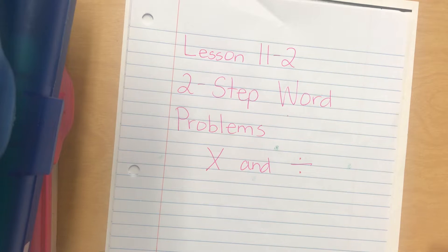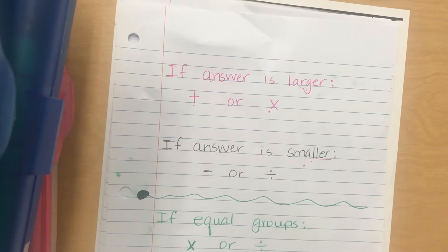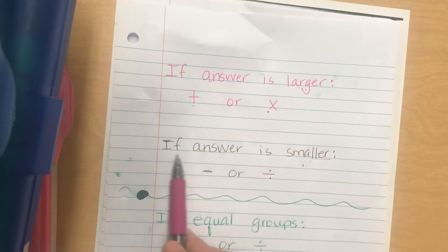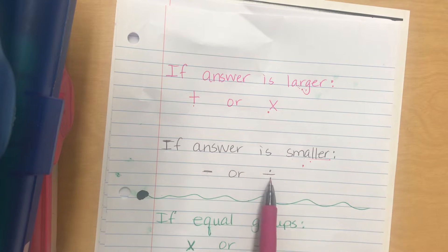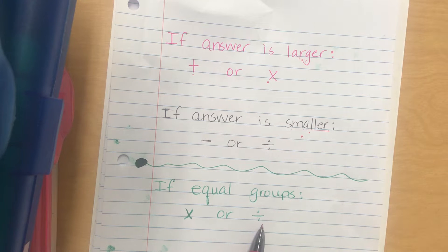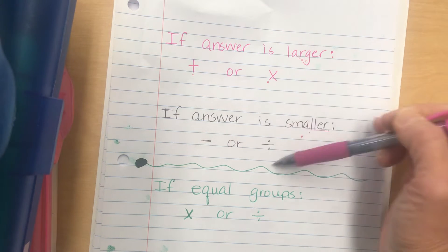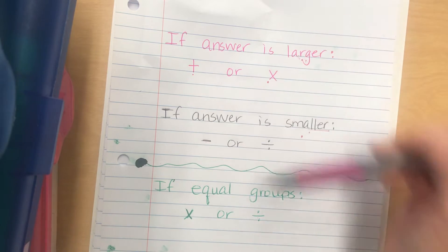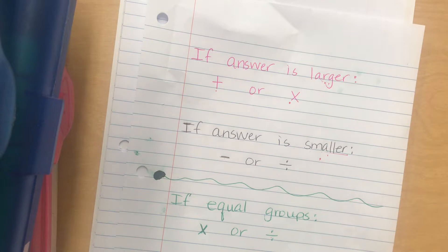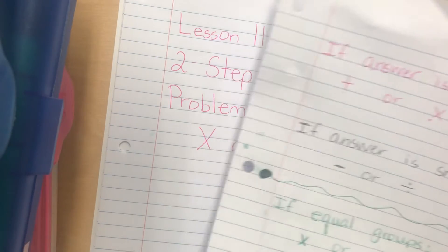This must mean that we are consistently dealing with equal groups. If we look at our guideline for word problems to decide which operation to use: if the answer is going to be larger, we add or multiply; if the answer is going to be smaller, we subtract or divide. If we're dealing with equal groups, it's going to be multiplication or division — which means we must be dealing with equal groups in this whole chapter.